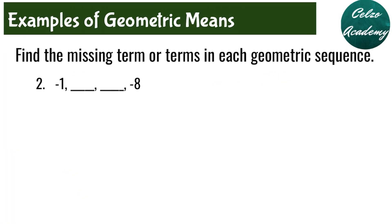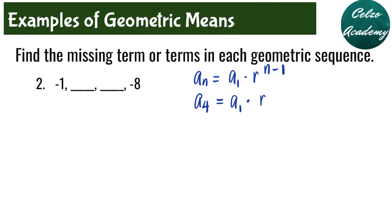So the geometric mean of 4 and 100 can be positive 20 or negative 20. Question number two: find the missing two terms in this geometric sequence. The first thing we need to do is solve for the common ratio r using the formula a sub n is equal to a sub 1 times r to the power of n minus 1. Since we have a total of four terms, we will use a sub 4. So a sub 4 is equal to a sub 1 times r to the 4 minus 1, which is r to the third. Our a sub 4 is the last term, which is negative 8, and our a sub 1 is negative 1, times r to the third.